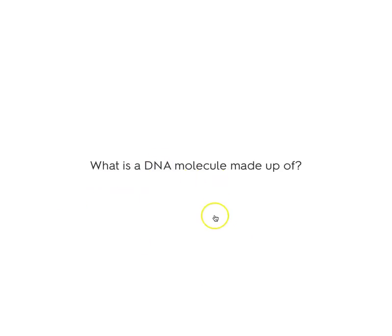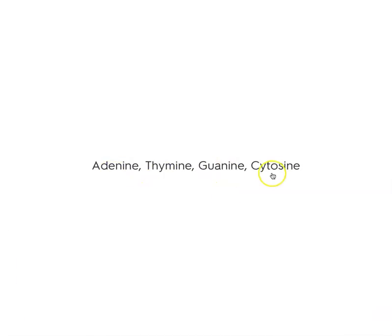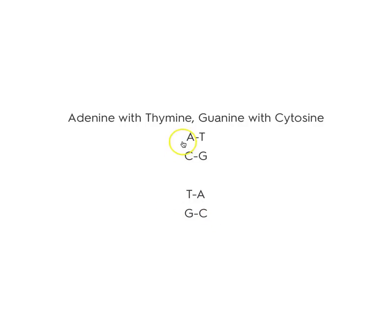What is a DNA molecule made up of? Sugar, phosphate, and base. What are the four bases of DNA? Adenine, thymine, guanine, cytosine. What are the two nitrogenous base pairs of DNA? A pairs with T, C pairs with G — vice versa: T goes with A, G goes with C.